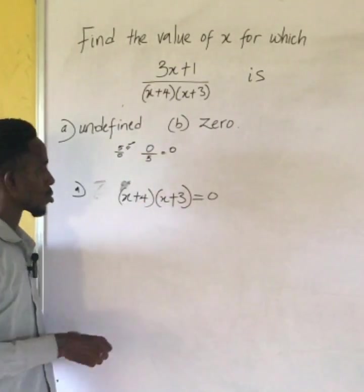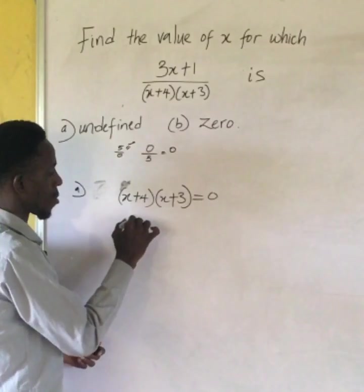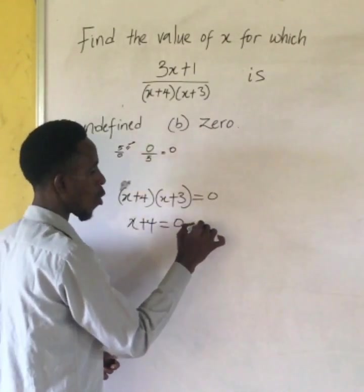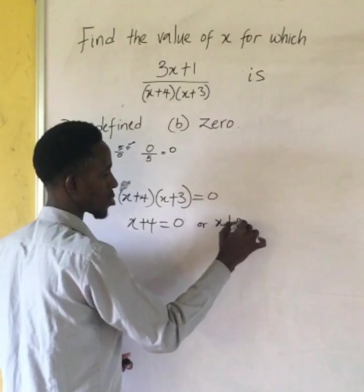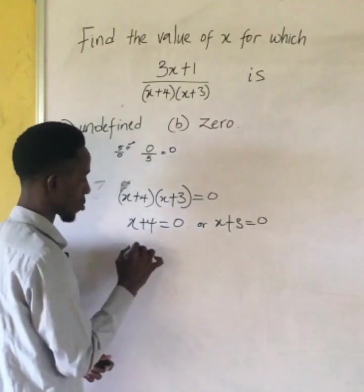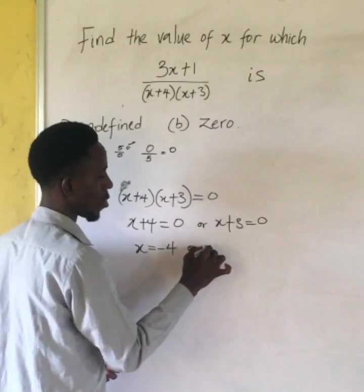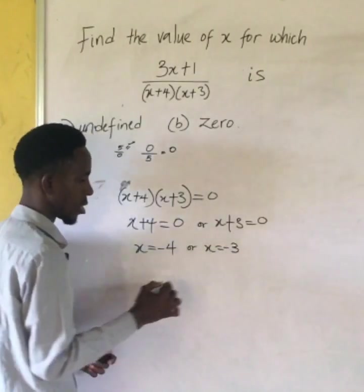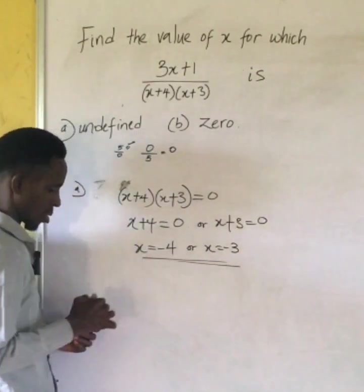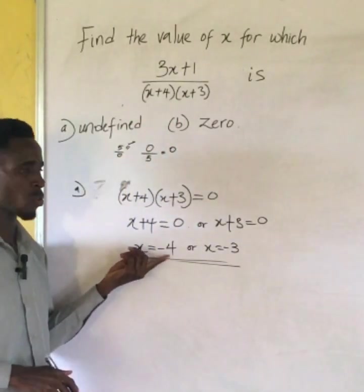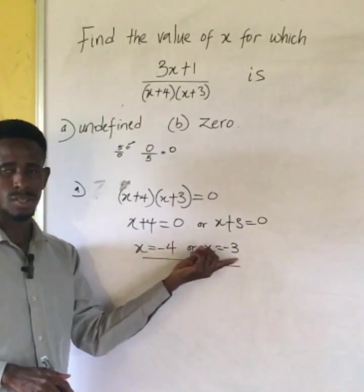For this expression to be undefined, it means that x plus four is equal to zero or x plus three is equal to zero. So here x is going to be minus four or x is minus three. So for this expression to be undefined, it's either x is minus four or x is three. If x picks any of this value then it is going to be undefined.